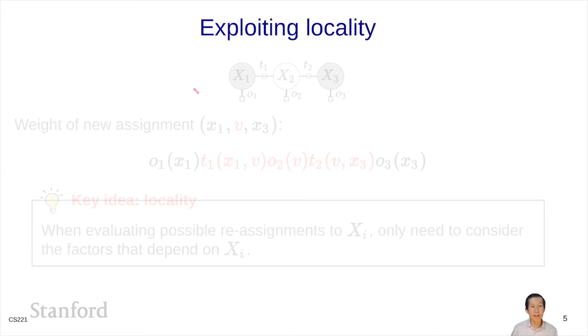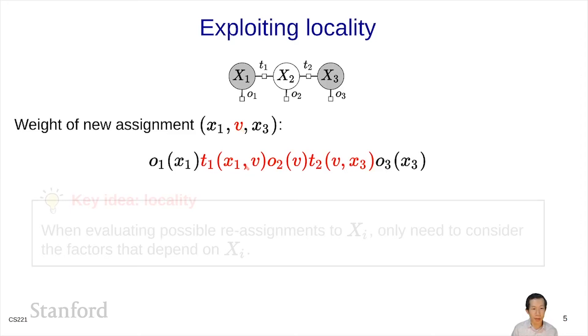We can refine this strategy a little bit more. Suppose we're trying to assign x2, the weight of a new assignment where x2 has been replaced with some v is as follows. You're multiplying all the factors in the CSP together: O1, T1, O2, T3. But note that only some of the factors depend on v. In particular, O1 and O3 don't depend on v. So no matter what v is, these are the same, which means that we can ignore them and just evaluate the factors that involve x2.